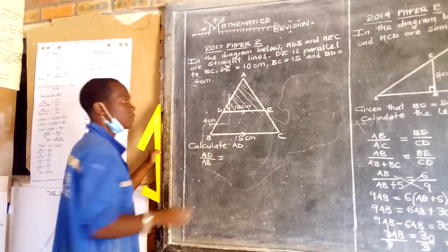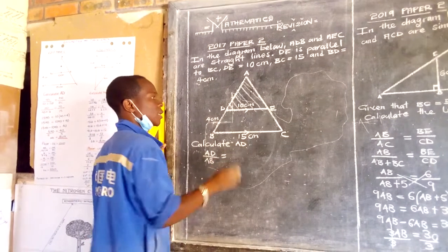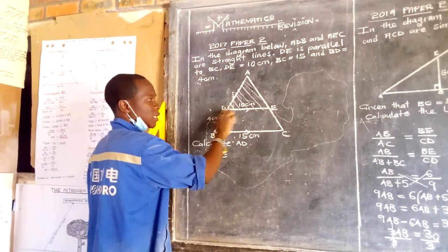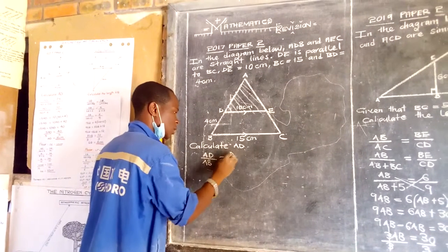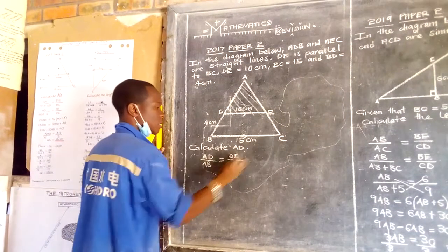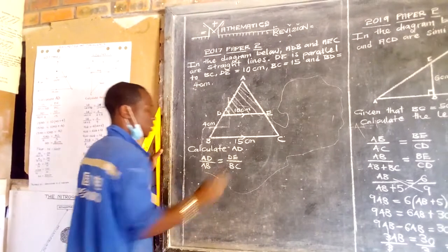It's equal to, then these two parallel lines, they correspond. These are corresponding sides. So it's DE and BC. These two are corresponding sides as well.